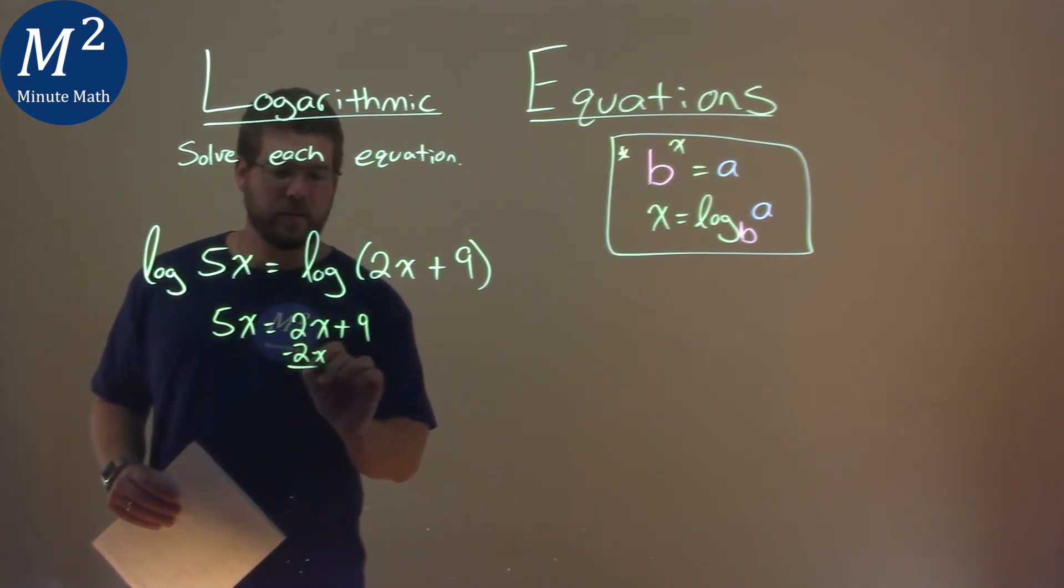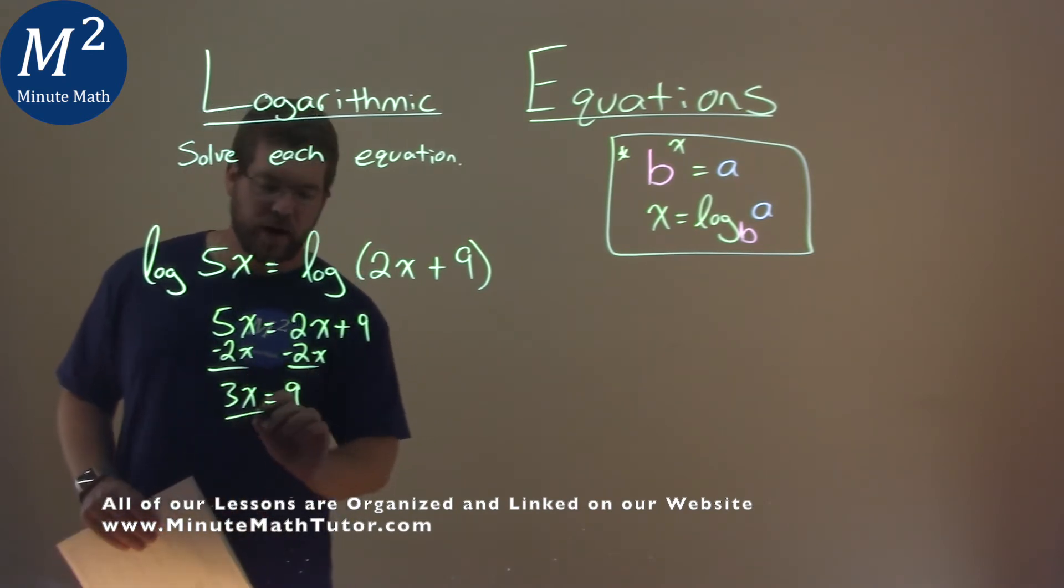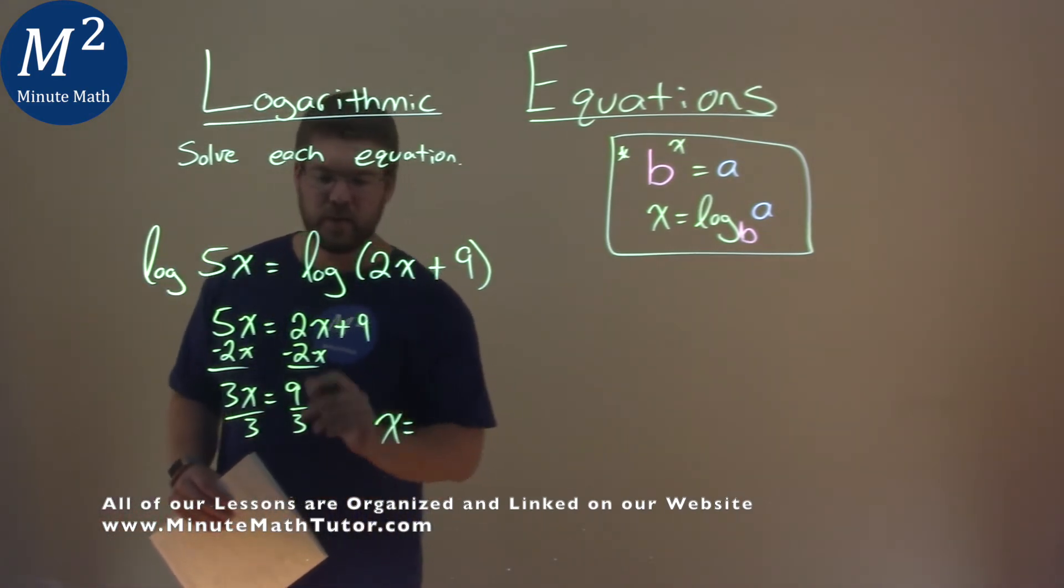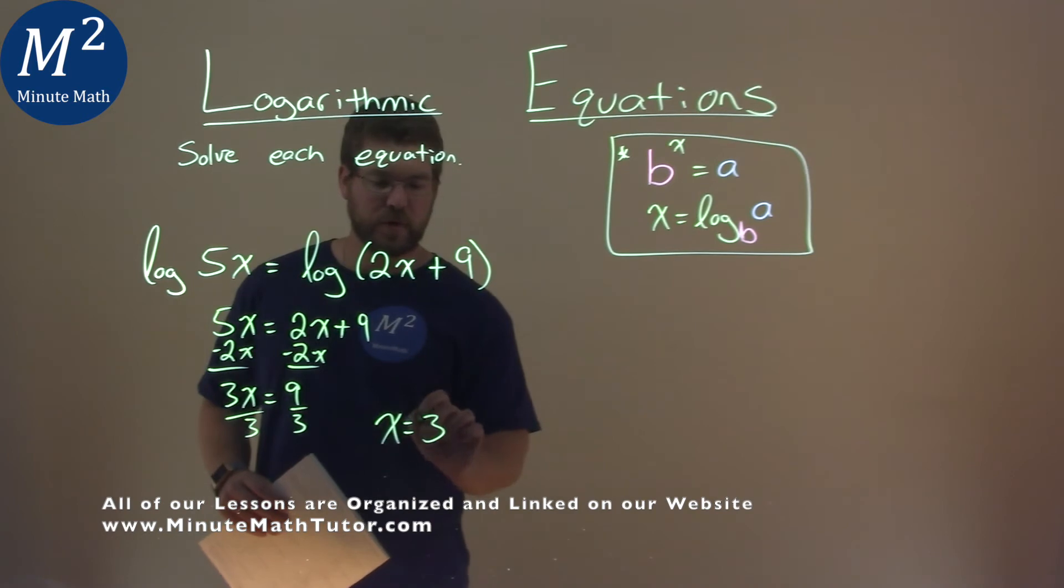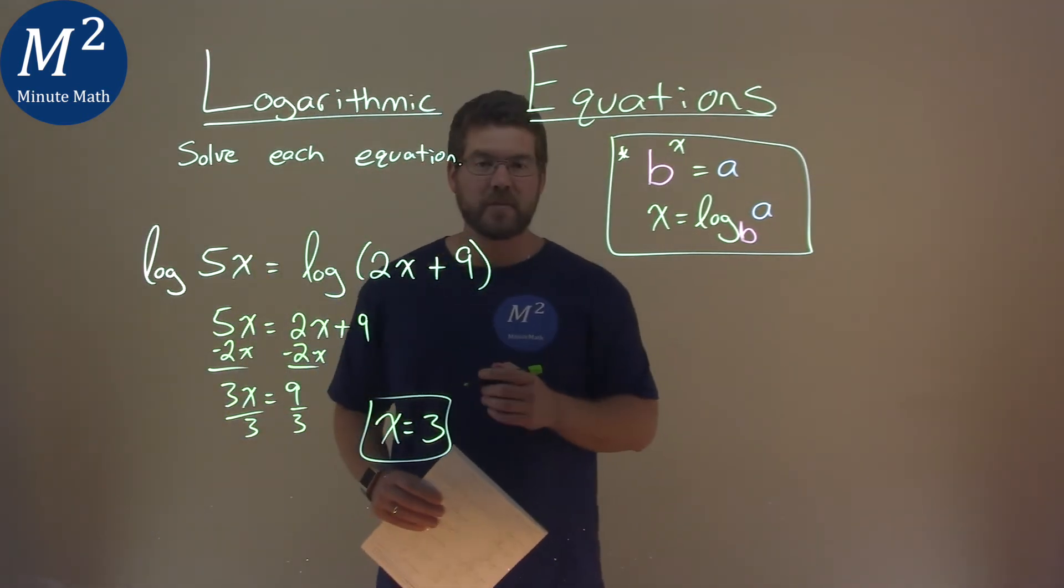I subtract 2x from both sides. 5x minus 2x is 3x, and that's equal to a positive 9. Divide both sides by 3, and we have our answer here: x equals 9 over 3, which is 3. And so, my final answer here is just x equals 3.